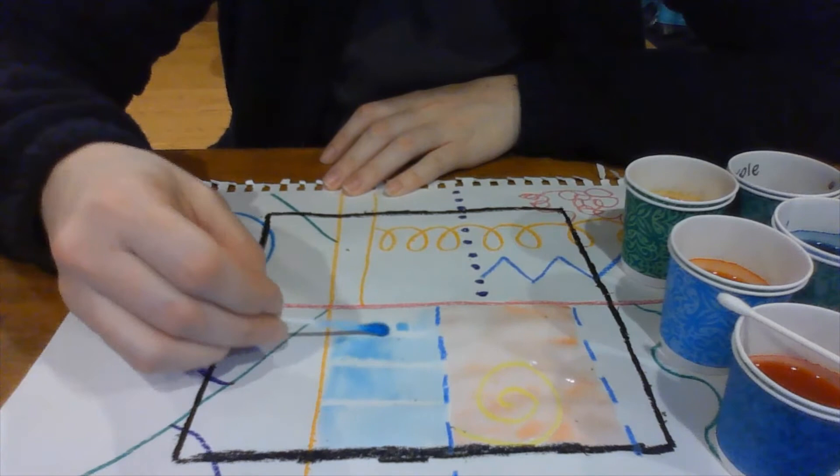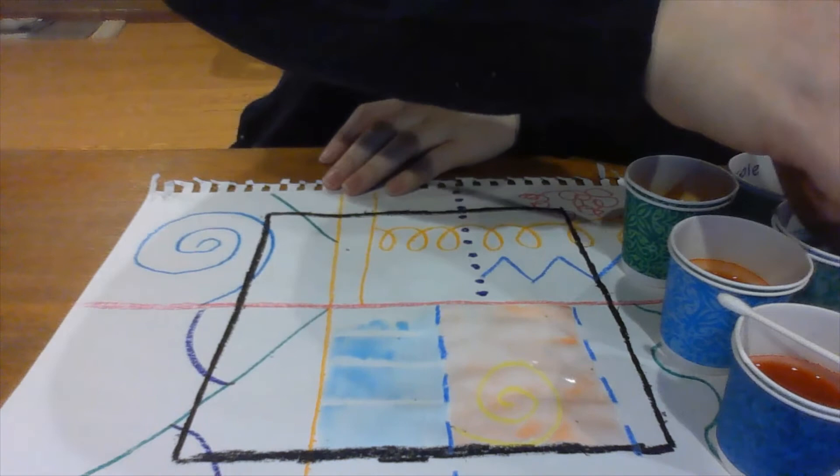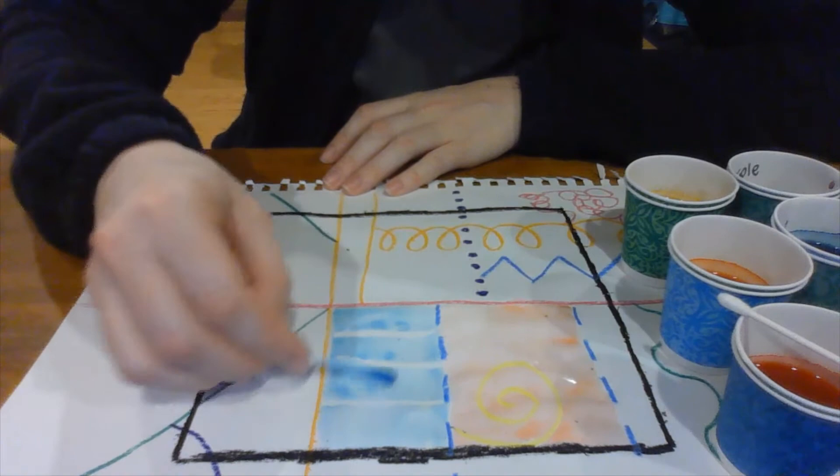If you get a whole bunch of paint on there, you can use that other end of the Q-tip to kind of clean off that extra wet spot. But as long as you pressed hard with that crayon, it should do a pretty good job of resisting your paint.